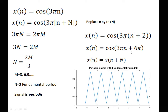We verify: for m = 3, x(n) = cos(3πn + 6π) = cos(3πn + 6π). Plotting in any software or programming language confirms x(n) = x(n + N), so this signal is periodic with a fundamental period of 2.